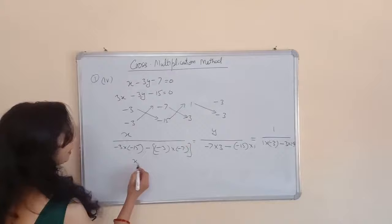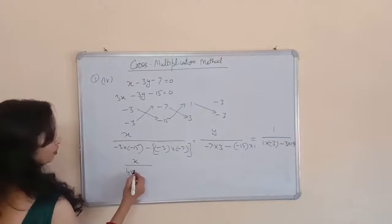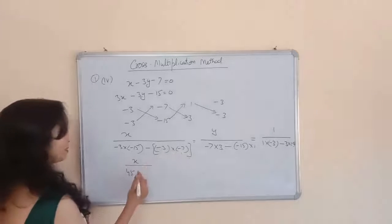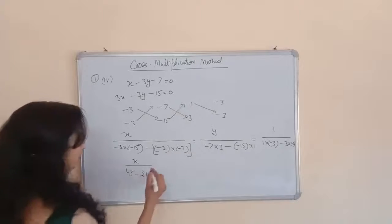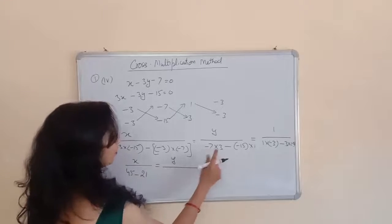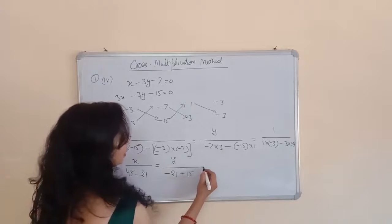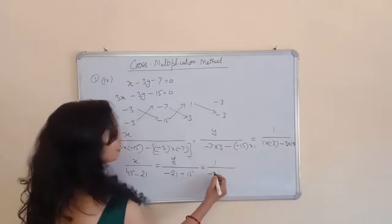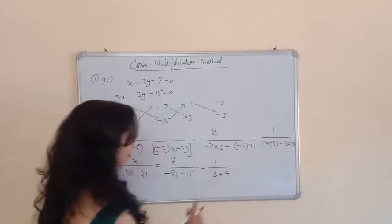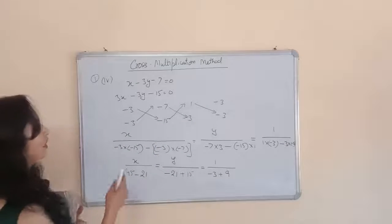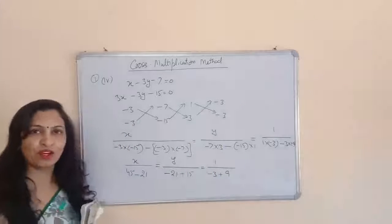Now we solve the denominators. For x: minus minus is plus, so 3×15=45, and minus minus is plus but plus minus minus, so 3×7=21. For y: 7×3 = -21, and minus minus is plus, so 15×1=15. For 1 upon: minus minus is plus, so 3×3=9. We are simply solving the denominators of each part.